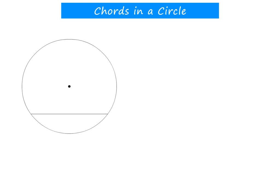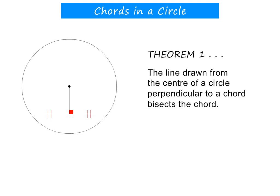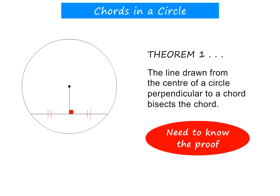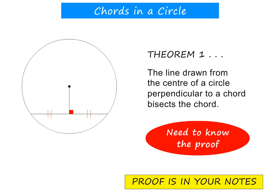There is another important property involving the center and a chord. If a line is drawn from the center to the chord and it is perpendicular to the chord, then this line will bisect the chord. This is an important theorem which you need to know and learn — let's call it Theorem 1. You also need to know how to prove the theorem. You will find this proof in the notes; please learn it off by heart.